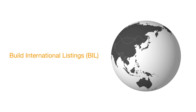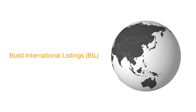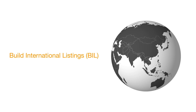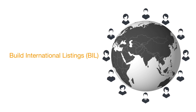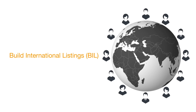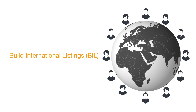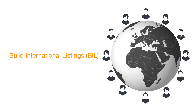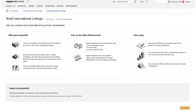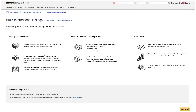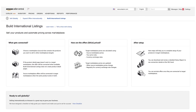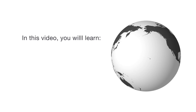We understand the complexity of managing an international business. To easily and quickly reach new global customers with Amazon, you can use a self-service tool called Build International Listings, or BIL. BIL enables you to quickly add offers to international marketplaces, then based on the rules you set, BIL automatically synchronizes offer prices across marketplaces.